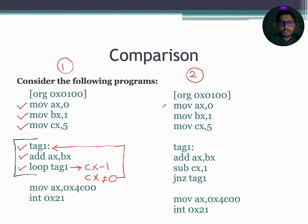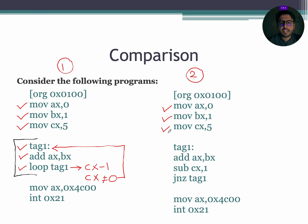Now let's move to program number 2. In program number 2, the first instruction is MOV AX, 0, so AX will become 0000. The next instruction is MOV BX, 1, so BX will be updated to 0001. The third instruction is MOV CX, 5, which will update CX to 0005. Next you can see a tag which is a directive, so we are going to move to the next instruction which is ADD AX, BX.